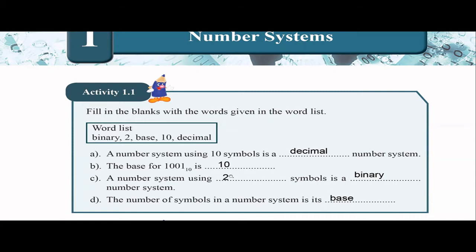For question A: a number system using 10 symbols is a decimal number system. We learned about this in our textbook. Next, the base for 10011 in base 10 — the base is telling the number of symbols in a number system, and here it is 10, so the base is 10.